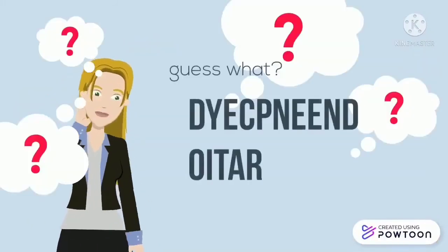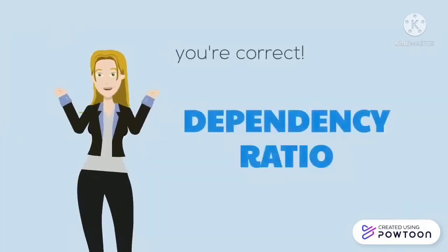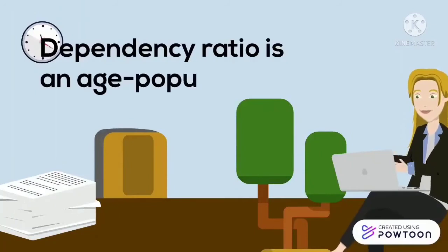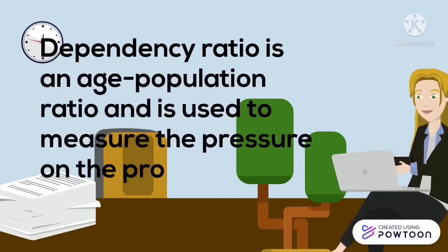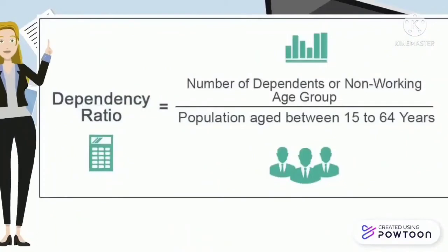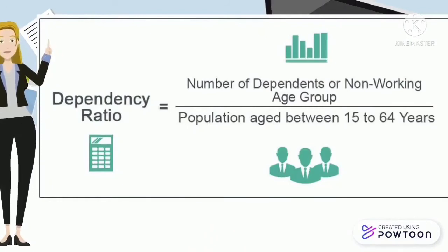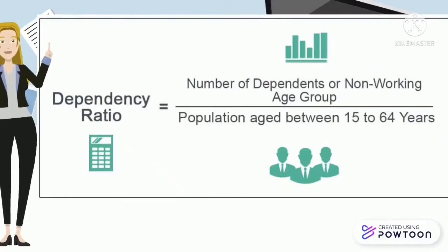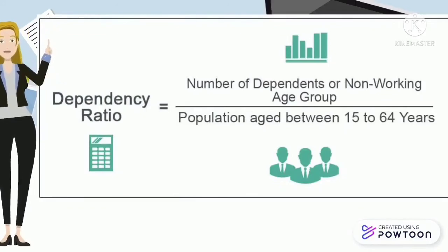Guess what — it's the Dependency Ratio! The Dependency Ratio is an age-population ratio used to measure the pressures on the productive population. It measures the number of dependents aged 0 to 14 and over the age of 65, compared with the total population aged 15 to 64. These demographic indicators give insight into the number of people of non-working age compared with the number of those of working age.